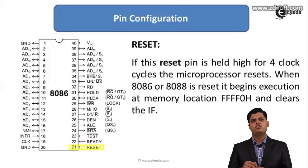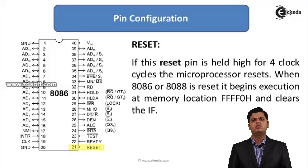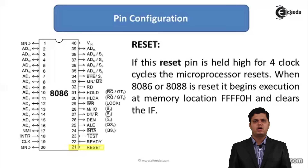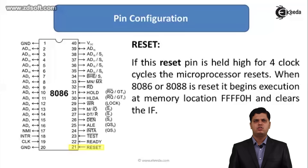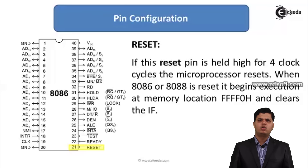The next pin is RESET. Whenever we need to reset the 8086 microprocessor, we use this reset signal. If the reset pin is held high for 4 clock cycles, the microprocessor resets — meaning it starts execution from the beginning. The starting address is taken as FFFFF0H, and it also clears the contents of the interrupt flag.